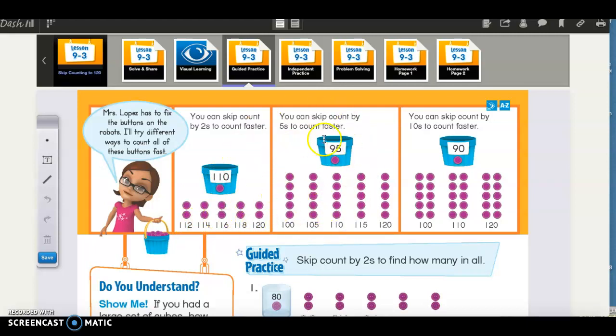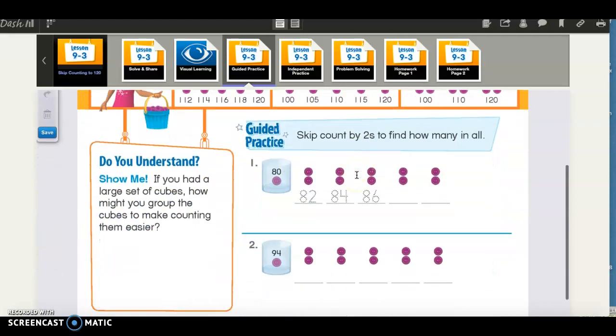Same thing by fives. 95, 100, 105, 110, 115, 120. And then they did it by tens. 90, 100, 110, 120. So let's do this together.